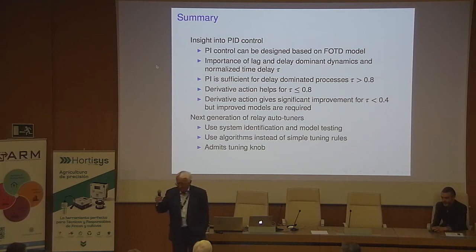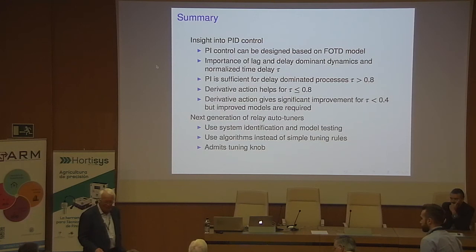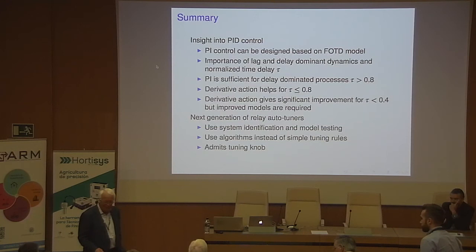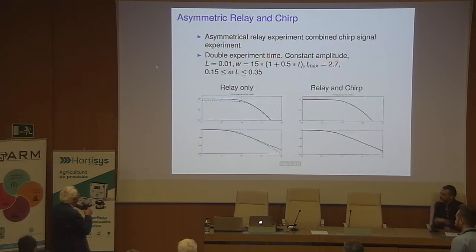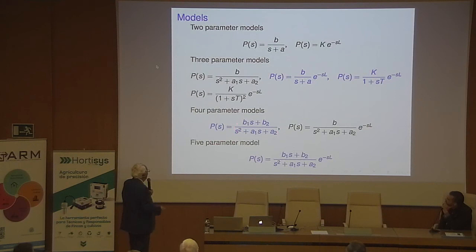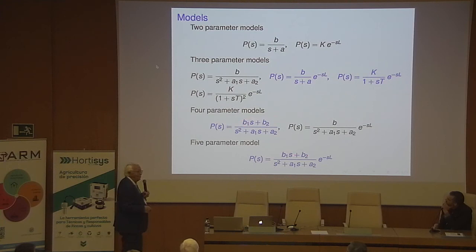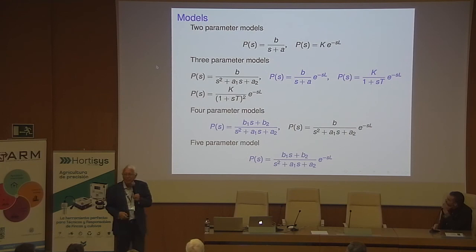A question: does it make sense to perform this analysis for oscillatory systems — second order with complex poles? By estimating models such as a second-order with oscillatory poles, or a model with a zero in the right half plane, and doing model testing, we can capture oscillatory systems, unstable systems, and systems with zeros in the right half plane. It makes sense nowadays to move away from simple rules and use optimization instead.